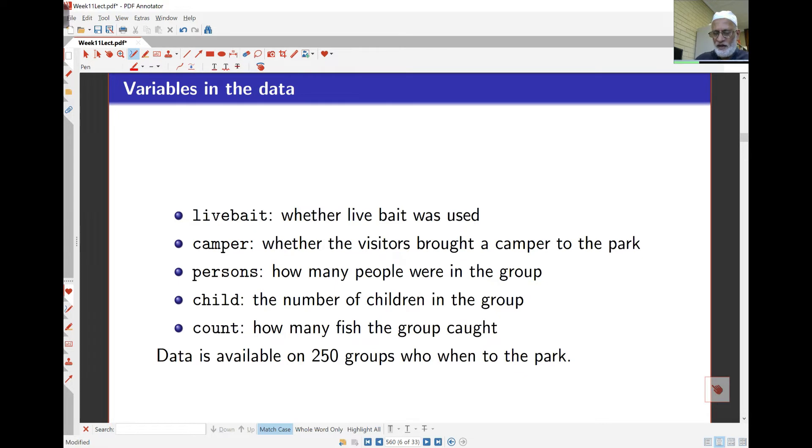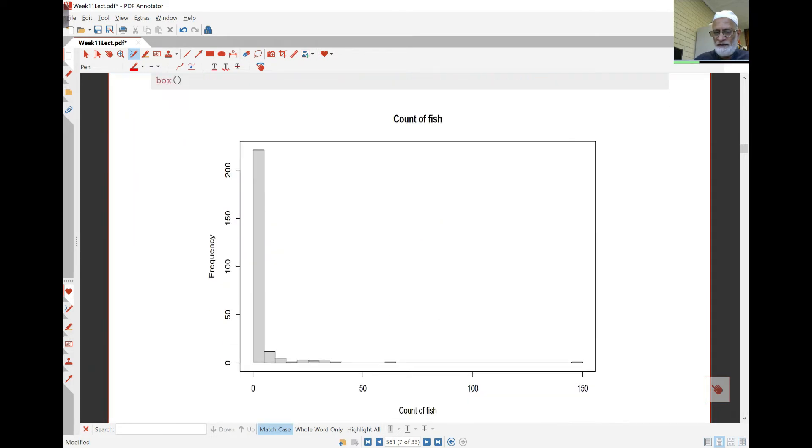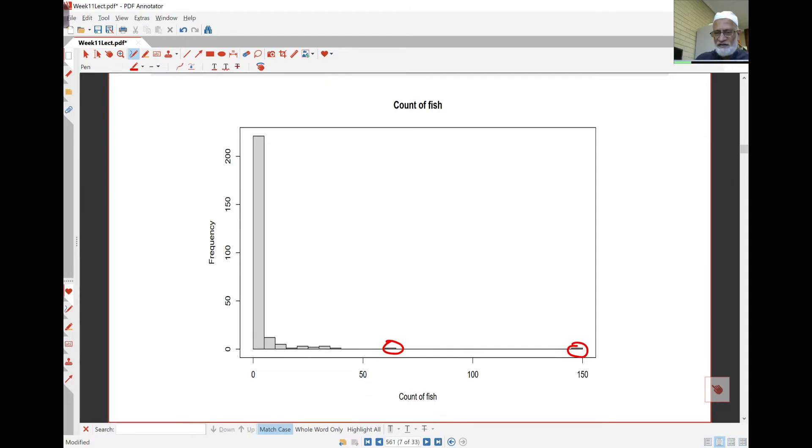Now of course many visitors don't catch any fish at all. So there will be lots of zeros in this data. Here are the variables that we have in the data set. They were all together 250 groups of people for whom data is available. And here is a plot of the data. This histogram is fine. As we said earlier, lots of zeros. There were only 250 groups altogether. So almost 220 or so didn't catch any fish.